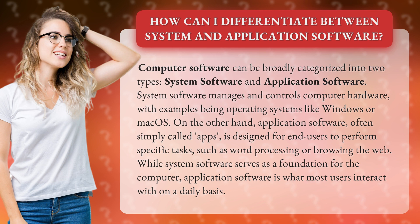On the other hand, application software, often simply called Apps, is designed for end users to perform specific tasks, such as word processing or browsing the web. While system software serves as a foundation for the computer, application software is what most users interact with on a daily basis.